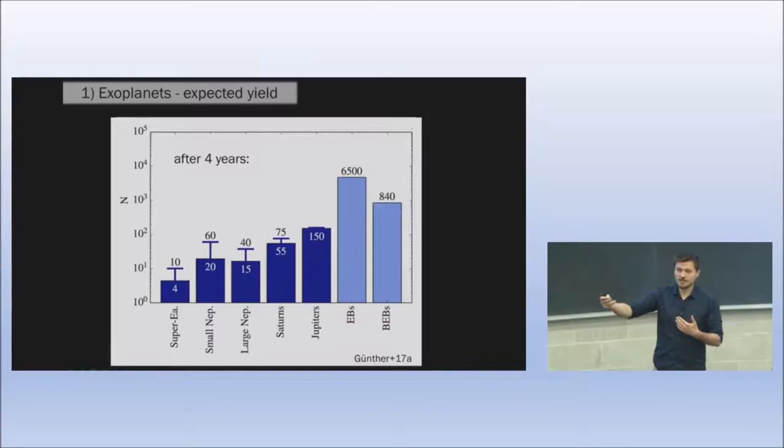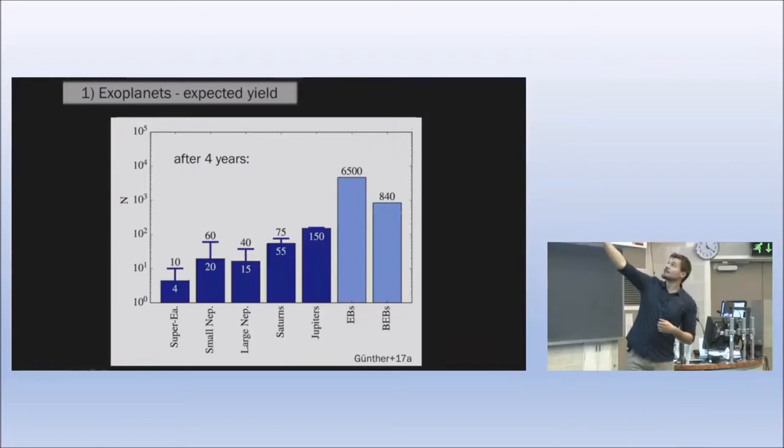We also see in this graph we have some very large bars here. This is a logarithmic scale. We will find thousands and thousands of these EBs and BEBs, eclipsing binaries and background eclipsing binaries. Those are these false positives that I called out in my title.